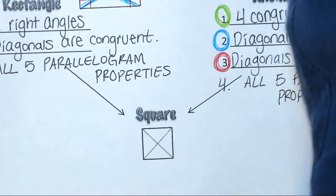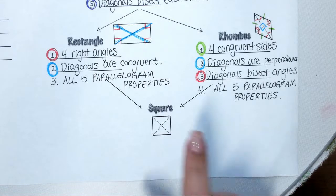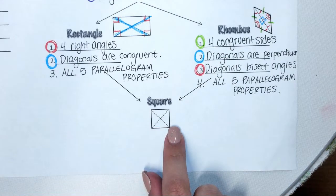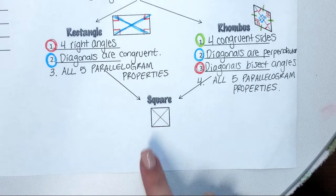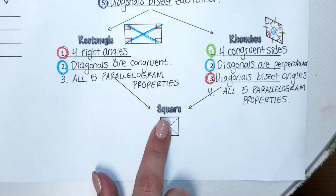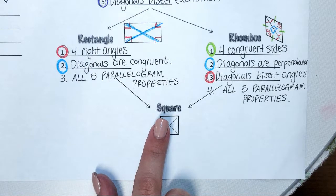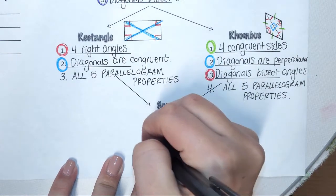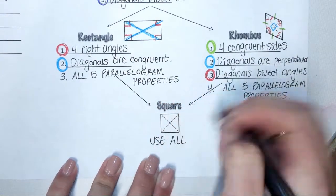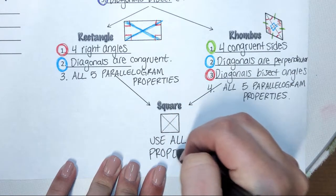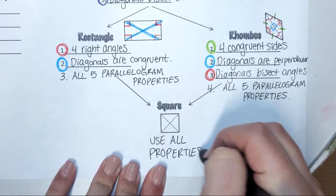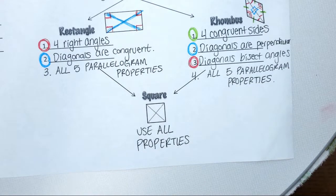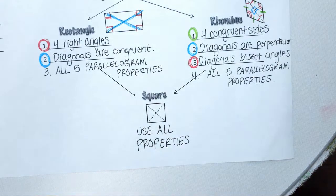Our last one: square. True or false — a square is a rhombus. True, because a rhombus has four congruent sides, and so does a square. True or false — a square is a rectangle. True, because it has four right angles. True or false — a square is a parallelogram. True, because your opposite sides are parallel. So for a square, all we're going to write is that we use all properties — the rectangle properties, the rhombus properties, and the parallelogram properties.